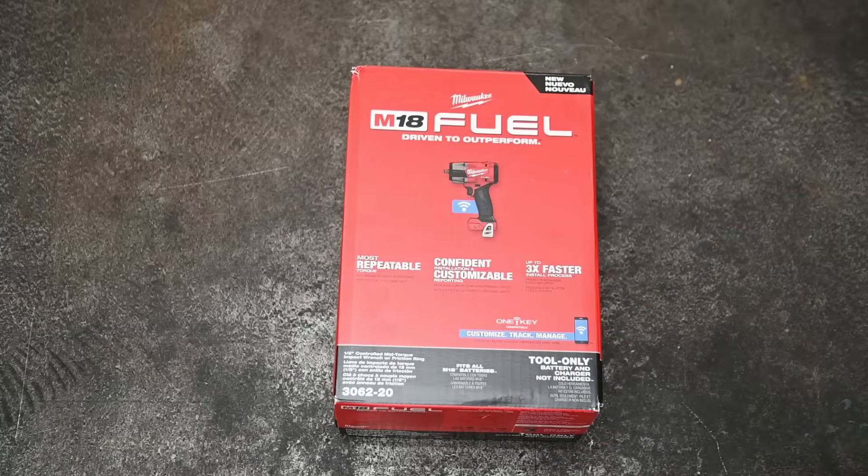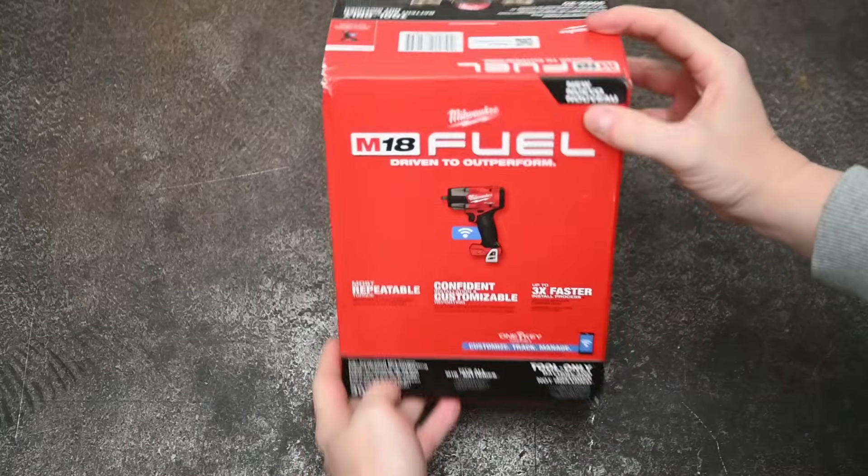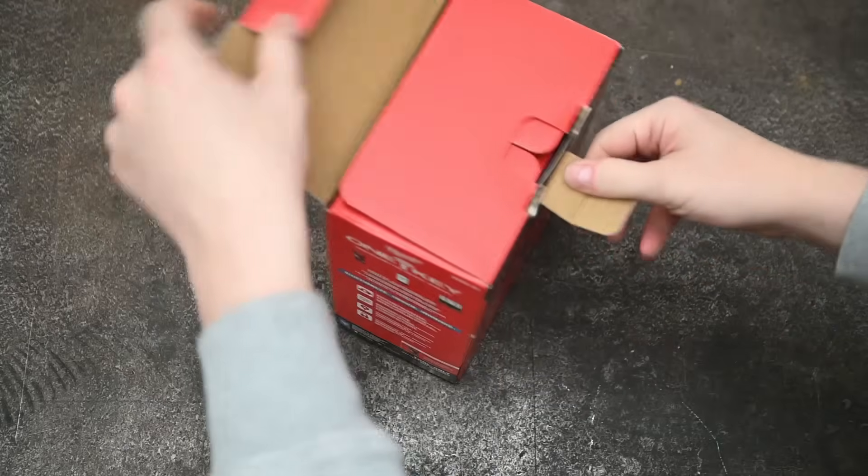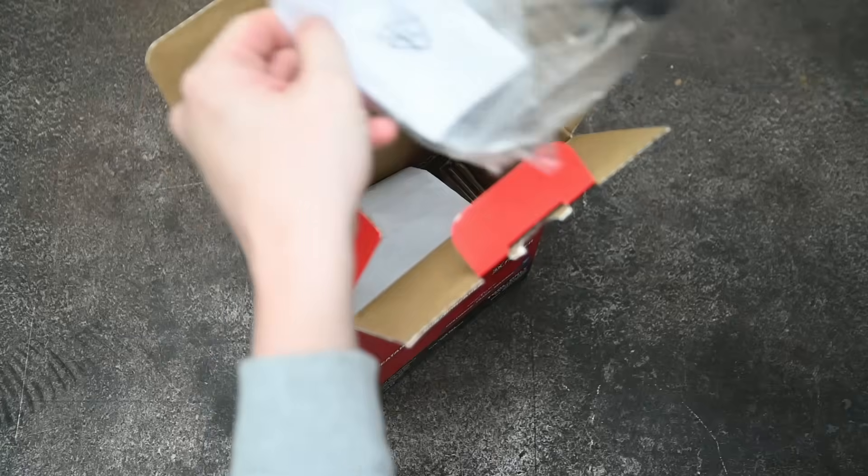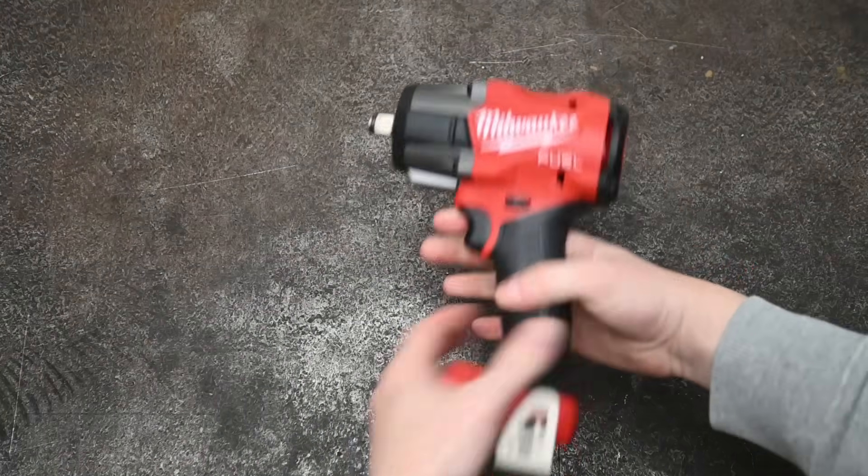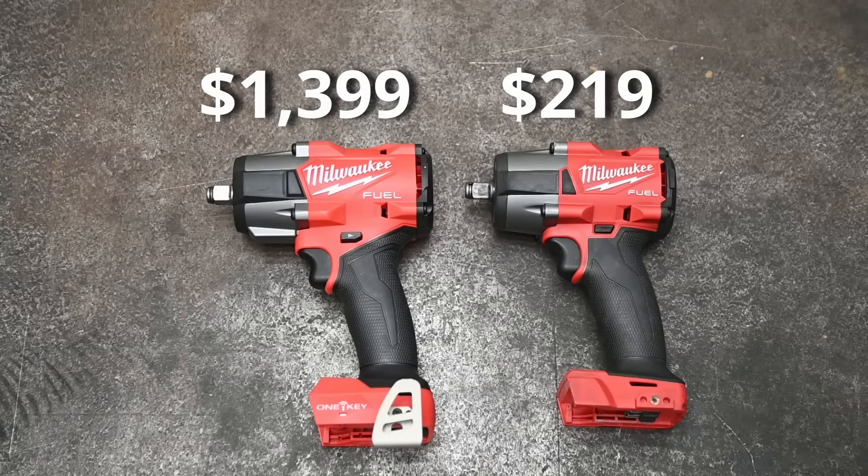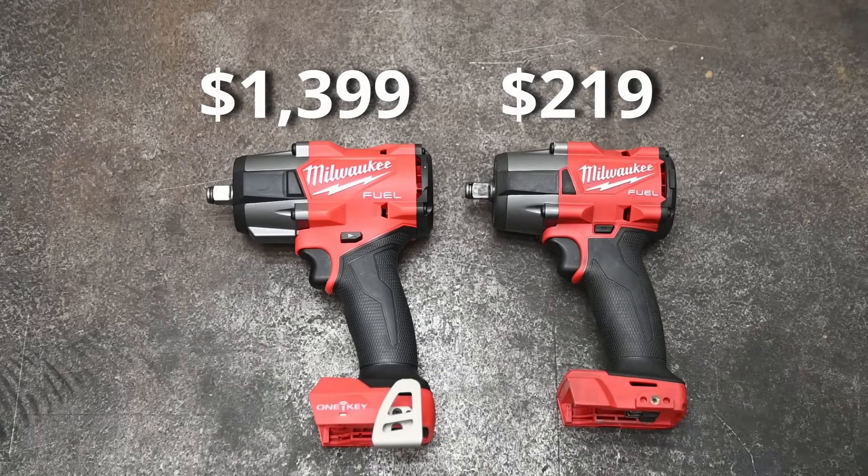Welcome back to the Torque Test Channel. In all likelihood, unless you're too far gone of a tool geek, you've never heard of the M18 3062. But that's this. It's Milwaukee's latest mid-torque impact wrench, and unlike their 2962 model that's $219, this is $1,399 for the bare tool. Yeah, I'm not kidding.